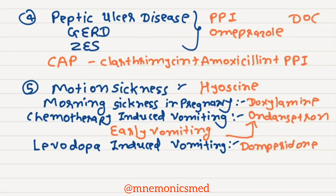For peptic ulcer disease, GERD, and Zollinger-Ellison syndrome, drug of choice is PPI or Omeprazole. There is also a triple therapy: Clarithromycin, Amoxicillin, and PPI.